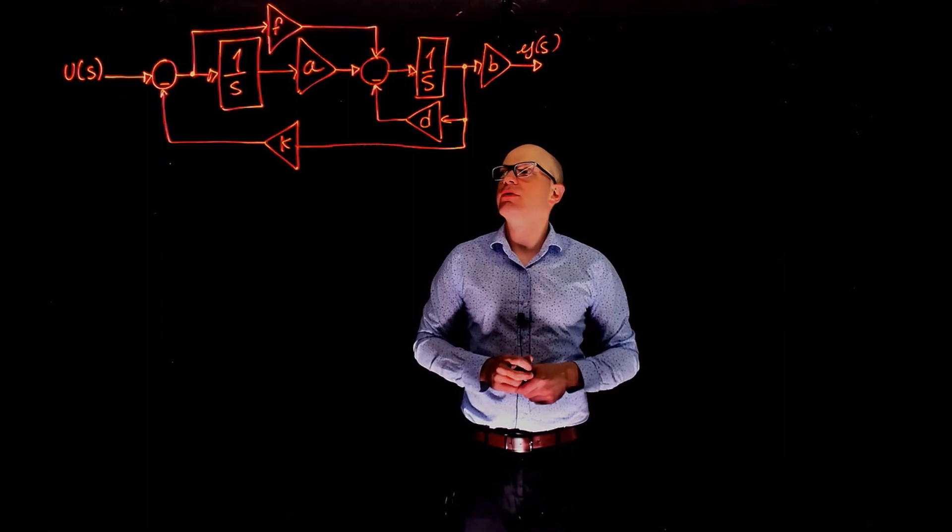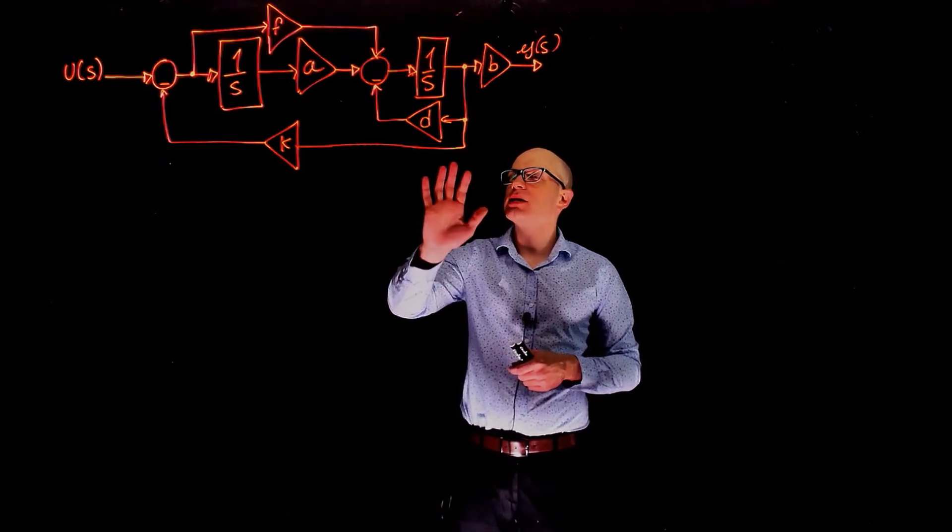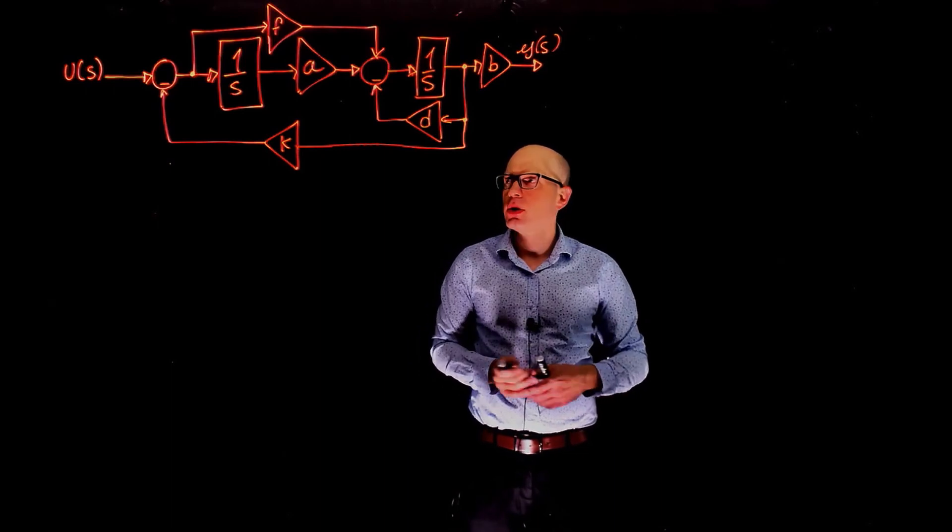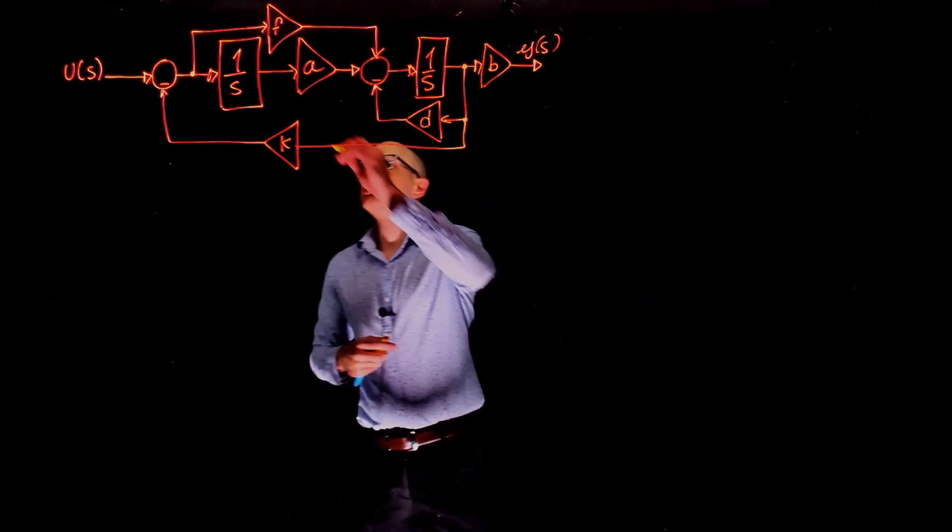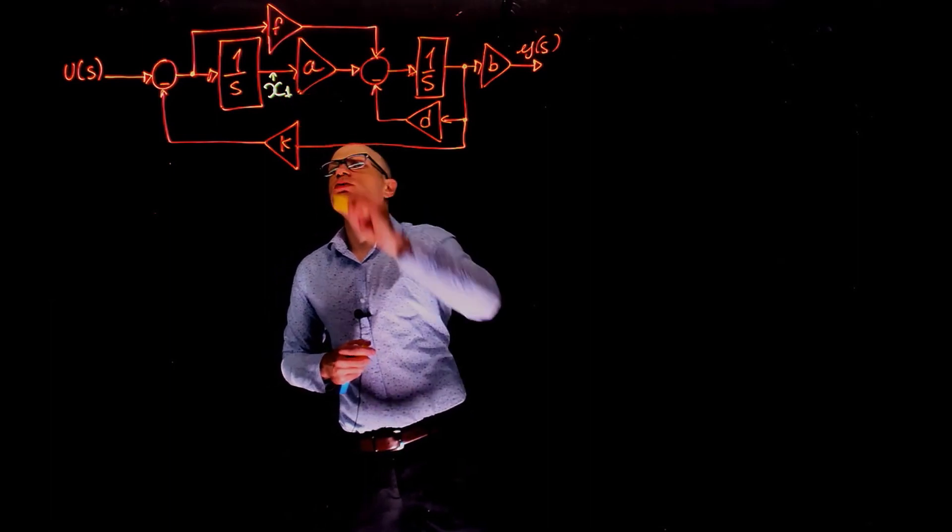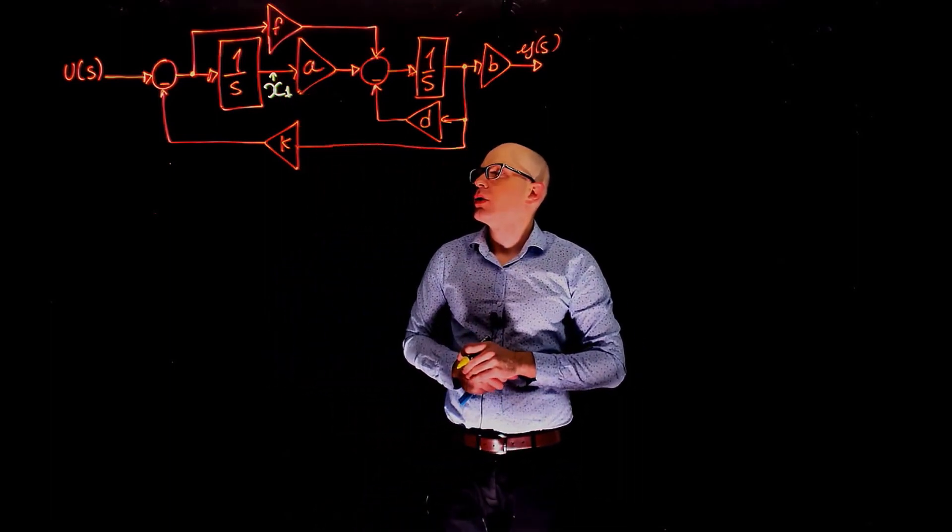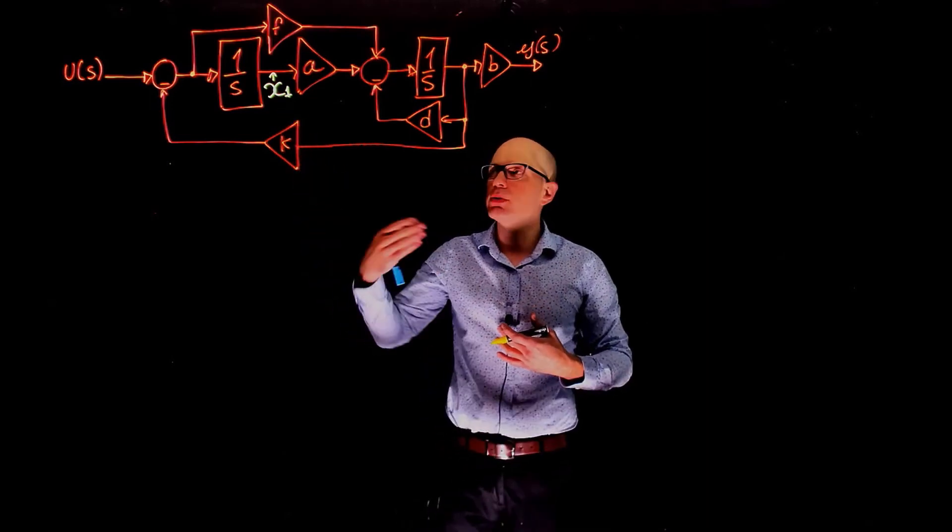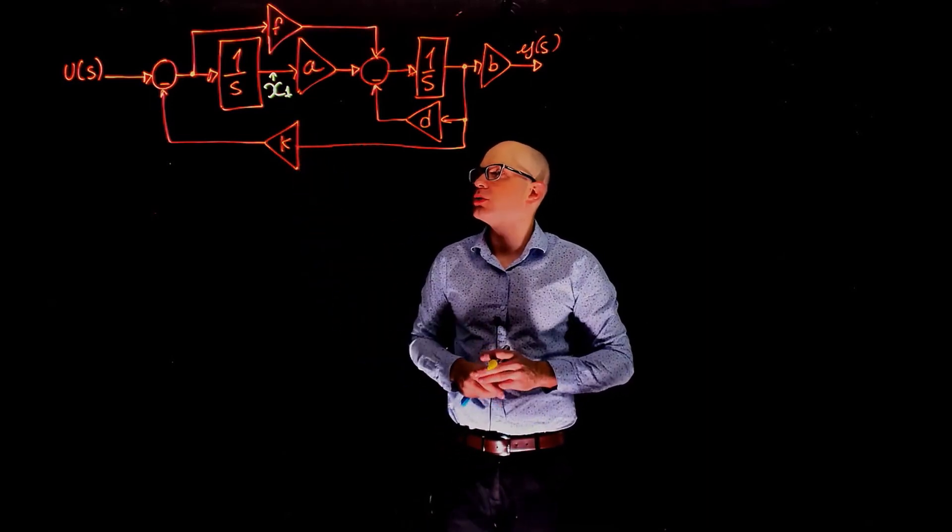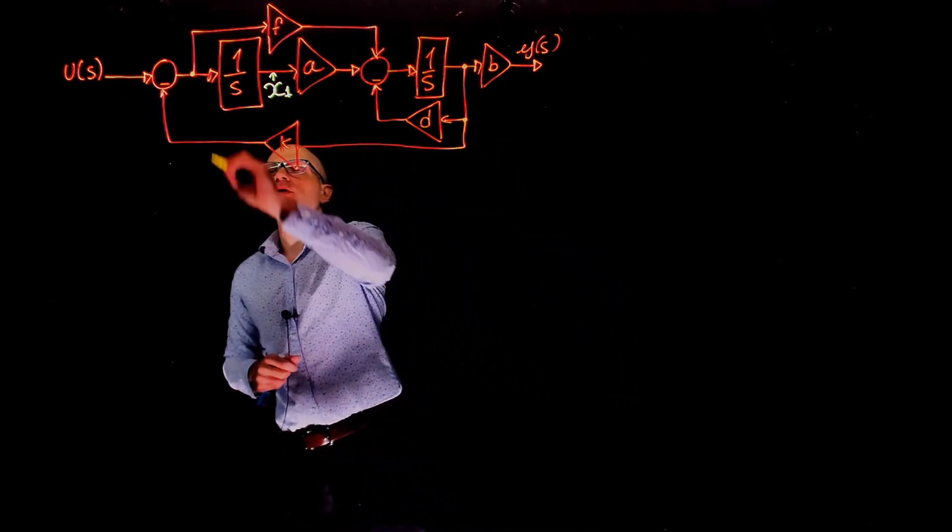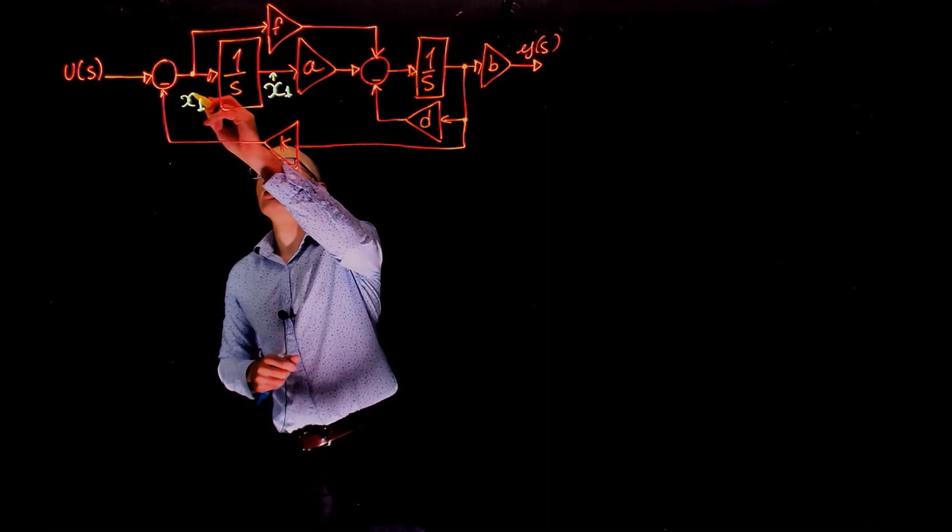Based on this observation, we can now identify exactly where on this block diagram the state variables are. One of them could be here, right after the integrator. Let's call this one x1. We know that in the state space model, we will have the state variable itself and the derivative. So we can also identify the derivative of x1, which is in this case just before the integrator. This is x1 dot.